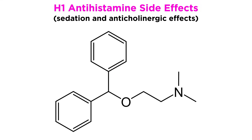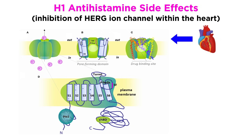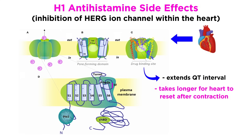The main side effects of H1 antihistamines are sedation and anticholinergic effects. Off-target effects in the cholinergic system result in dry mouth, dry eyes, and urinary retention in rare cases. Additionally, inhibition of the HERG ion channel within the heart by antihistamines can extend the heart's QT interval, which increases the time it takes the heart to reset after a contraction, potentially leading to dangerous arrhythmias.